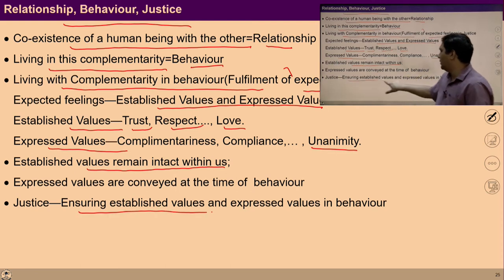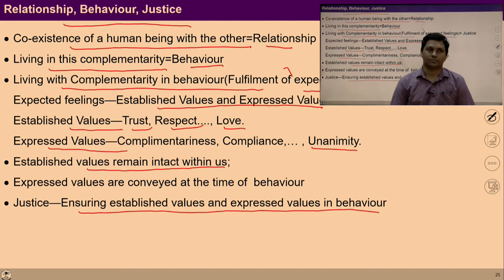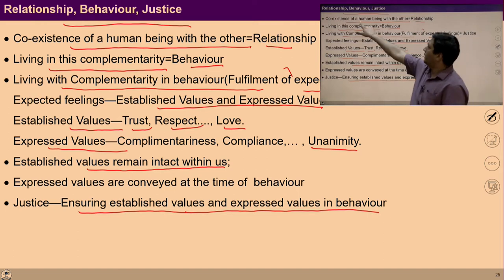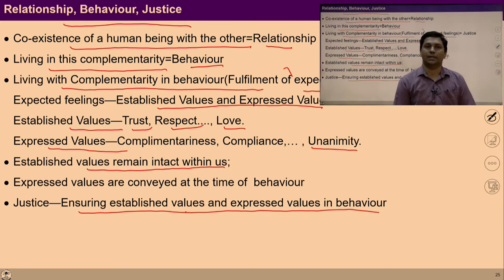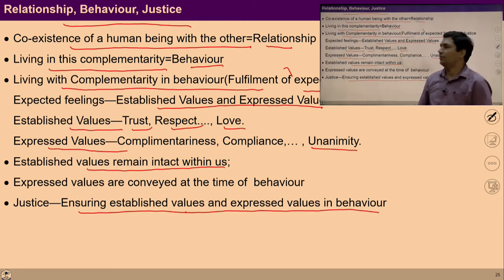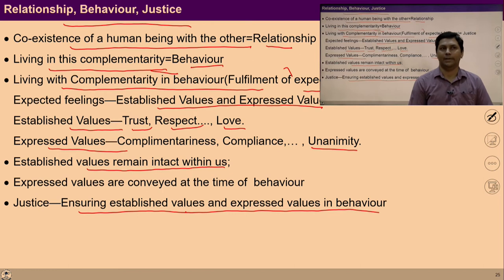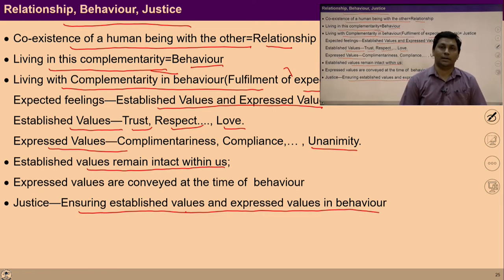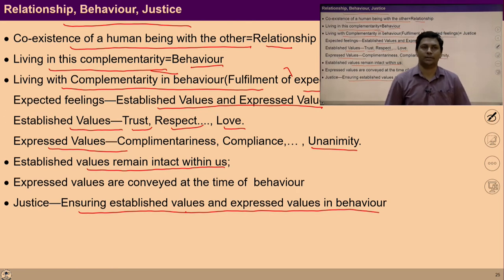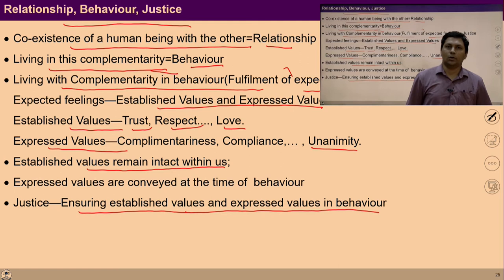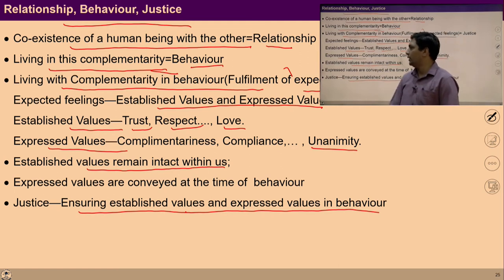Justice ensures established values and expressed values in behaviour. To recognize established values and to fulfill expressed values, clarity of co-existence with human beings is required. Clarity of co-existence with the other human being is relationship; when I fulfill those relationships in complementarity while interacting with others, this is behaviour. And in behaviour, these expected values are required — so when we fulfill established values and expressed values, it ensures justice.